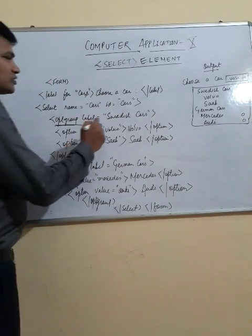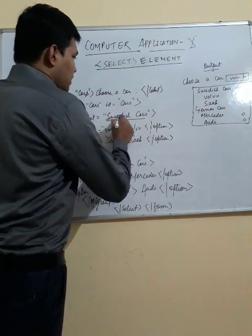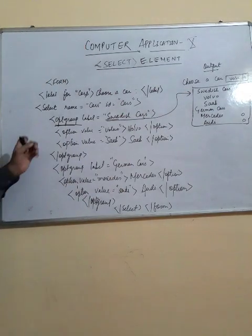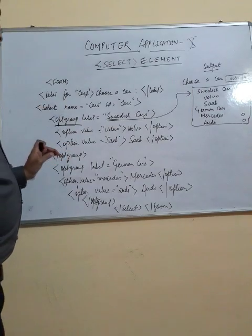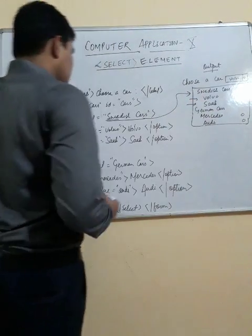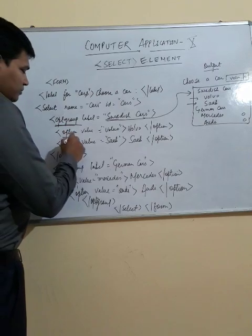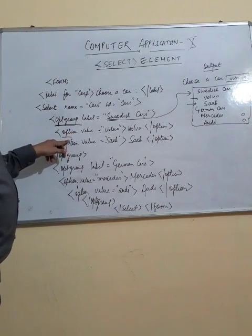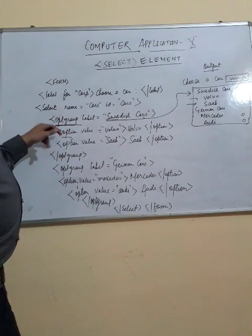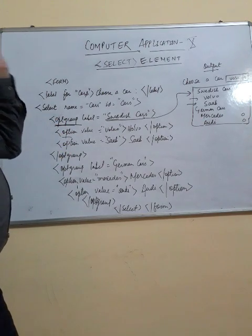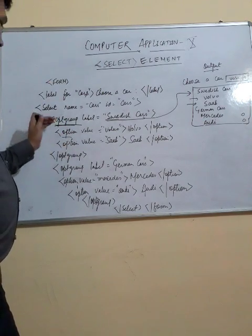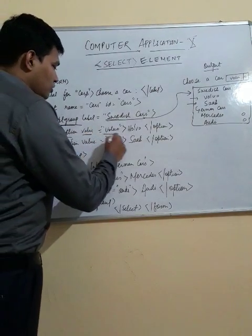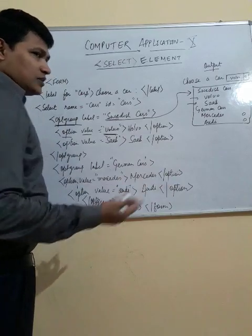Now I have defined the option group. The first group label is 'Swedish Car', as you can see here. The different options under this group are Volvo and Saab. The option tag is used to define each item — option is a tag under the optgroup element, and the value of this option will be 'Volvo'.